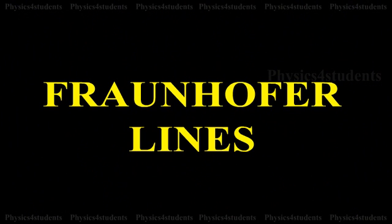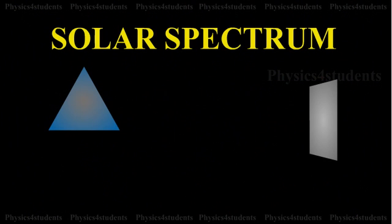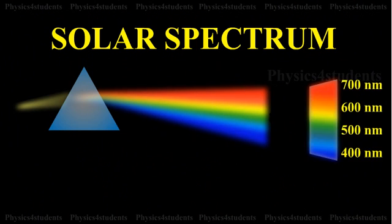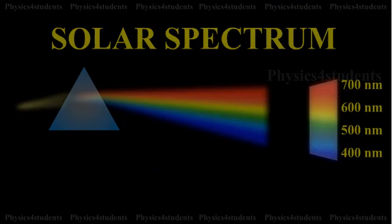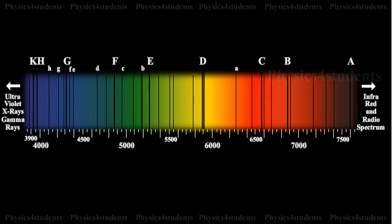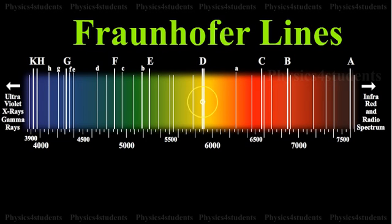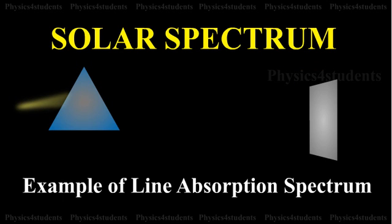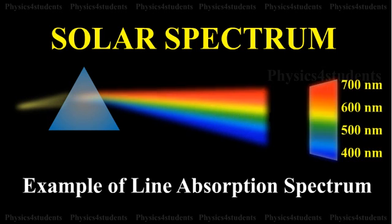If the solar spectrum is closely examined, it is found that it consists of a large number of dark lines. These dark lines in the solar spectrum are called Fraunhofer lines. Solar spectrum is an example of line absorption spectrum.